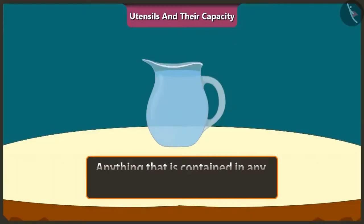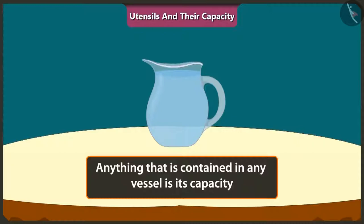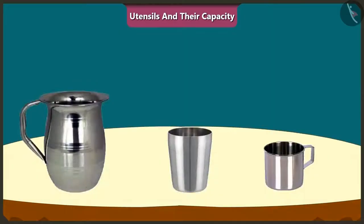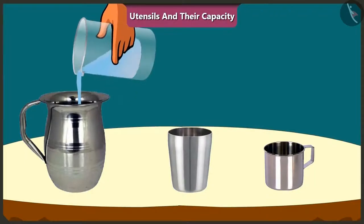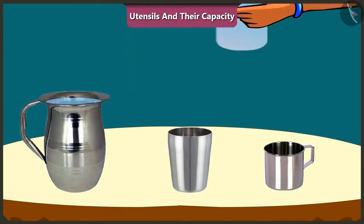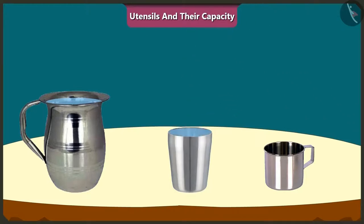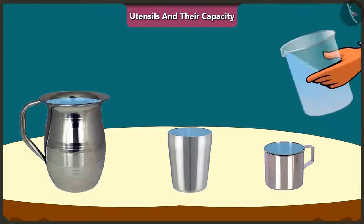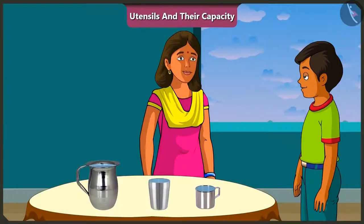See Mishtu, the capacity of any vessel is exactly how much of anything we can fill it with. Come on, let me explain it to you. See, I will pour water in this jug, in this glass, and in this mug. The amount of water that can fill each of these vessels respectively is called its capacity.